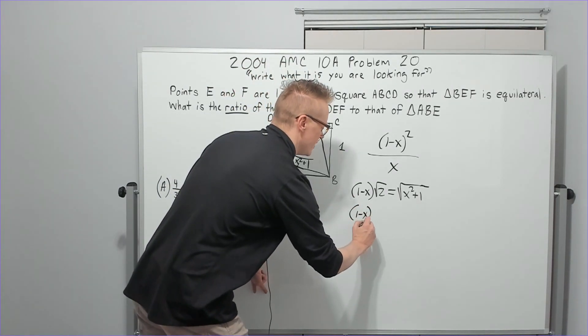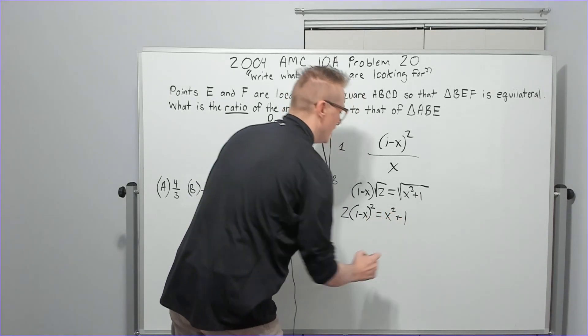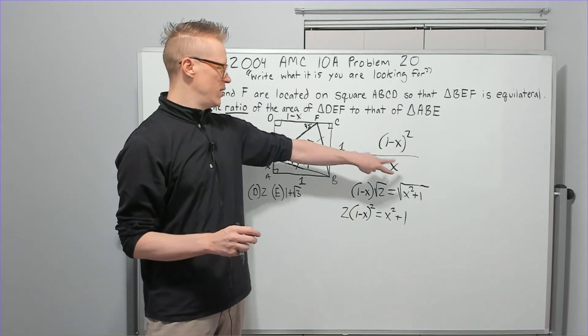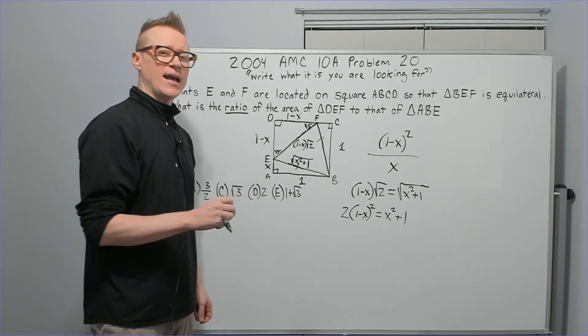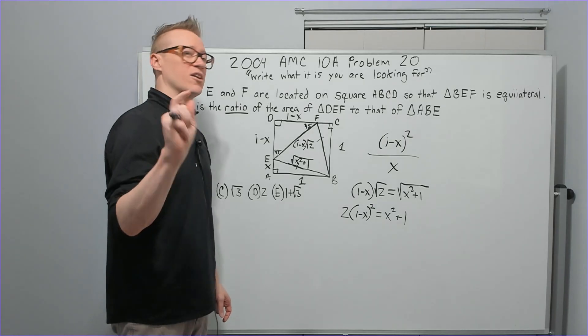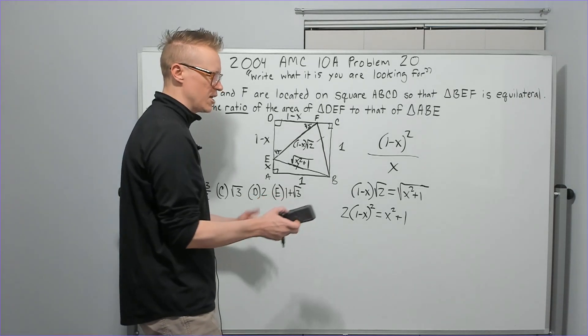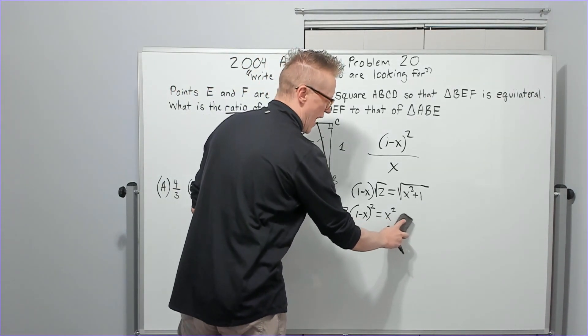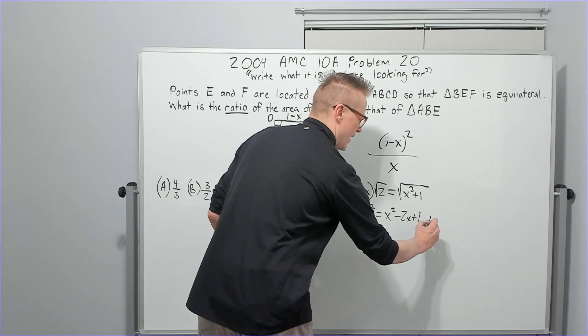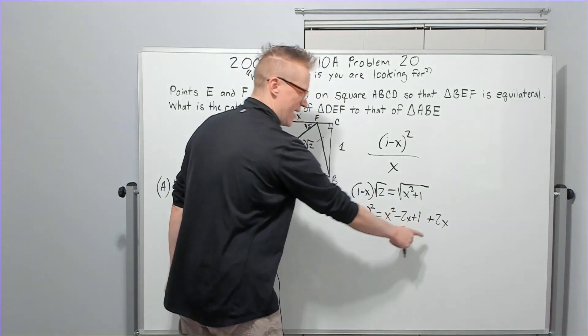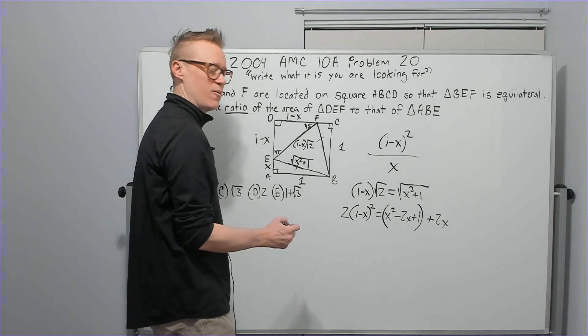So one minus X quantity squared times two is equal to X squared plus one. How though? How are we going to get what we want? We need to divide by X and I don't see how I'm going to get, I don't see it. Well, something I learned from volume one and probably it's in the algebra book as well, but volume one has it pretty extensively in one of the early chapters where you'll do something like this, that you can add and subtract the same value.